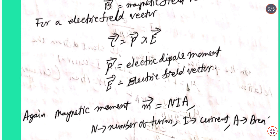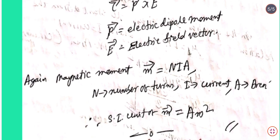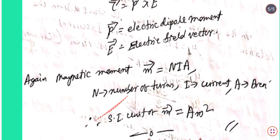The magnetic moment vector m = n × i × A, where n is the number of turns, i is the current, and A is the area. The unit of magnetic moment is A·m².